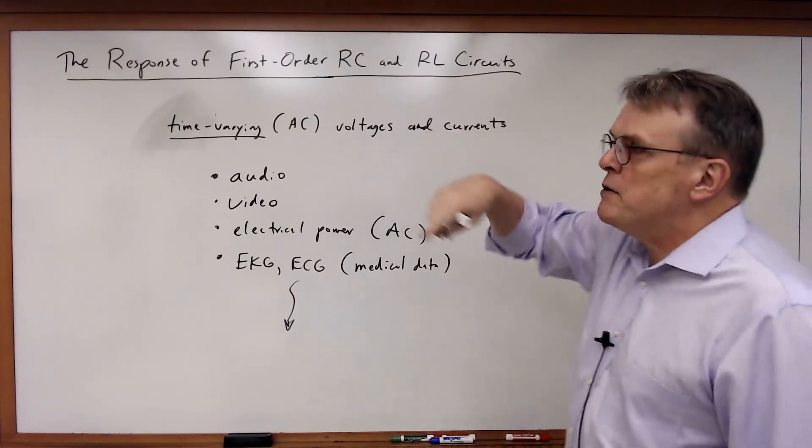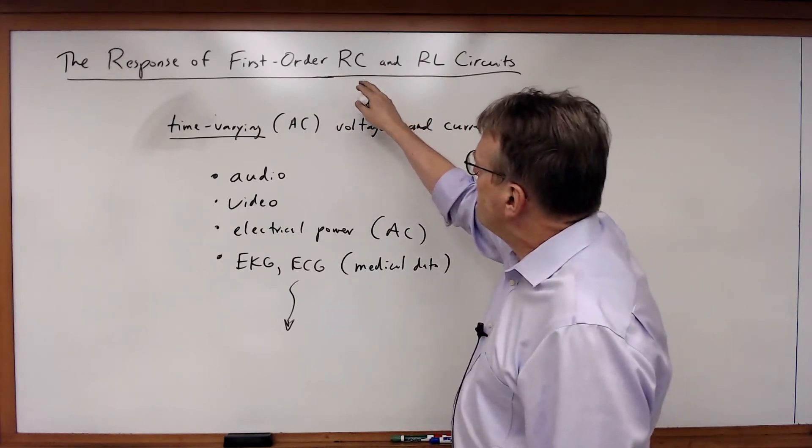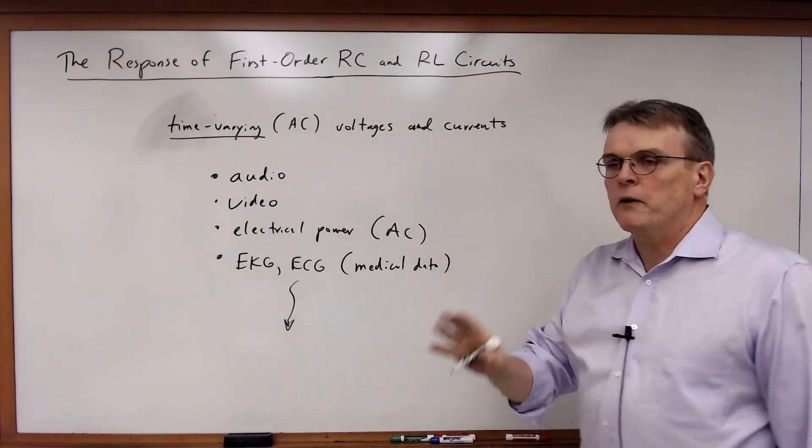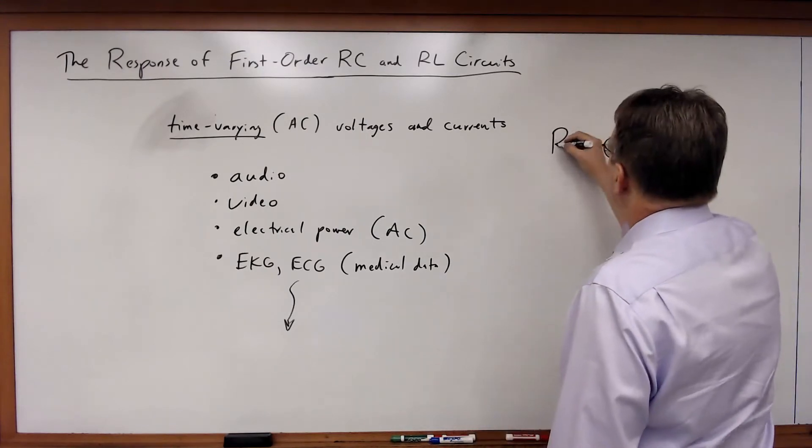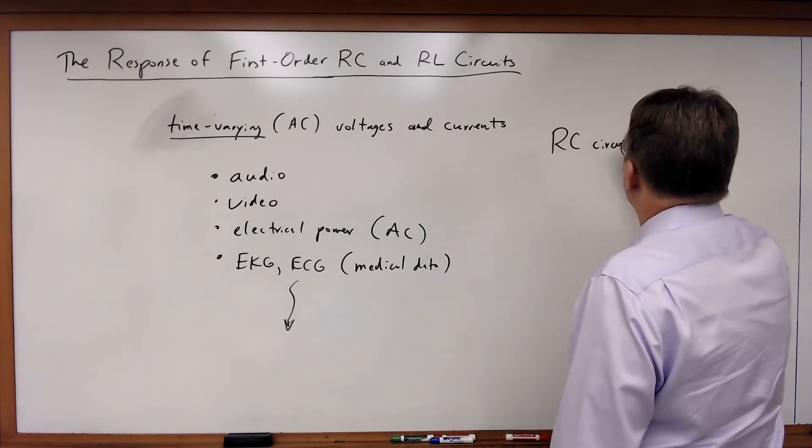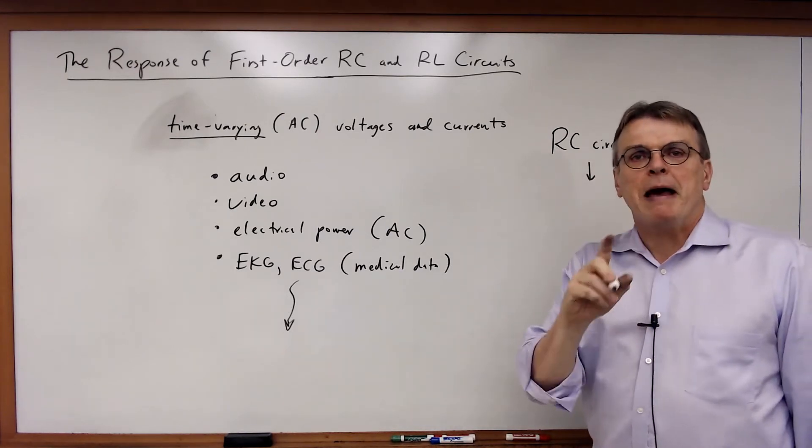So a few definitions here. First order RC, RL circuits. What do we mean by RC and RL? Well, they're going to be two classes of circuits we're going to look at. First will be the RC circuit, which is going to be a combination of resistors and a capacitor.